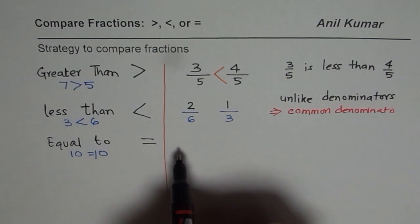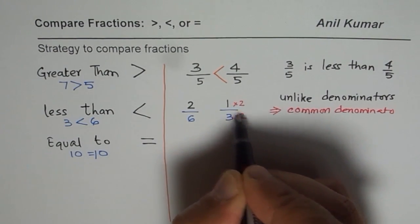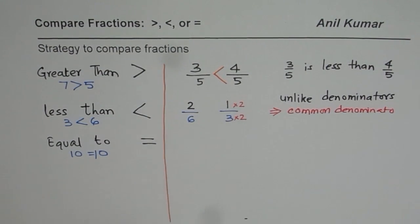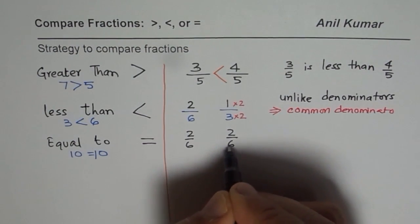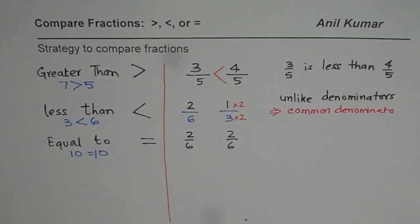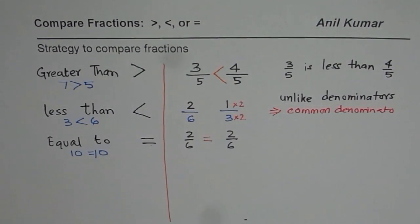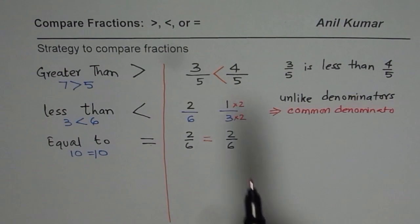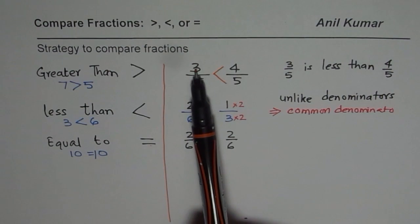To make a common denominator, we can multiply this by 2. If you multiply 1 over 3 by 2, you get 2 over 6. So here I get 2 over 6, and here also I get 2 over 6. Now we can compare — they are the same, so they are equal to. That is how we can determine whether fractions are equal or not. With a common denominator it is easy to compare.